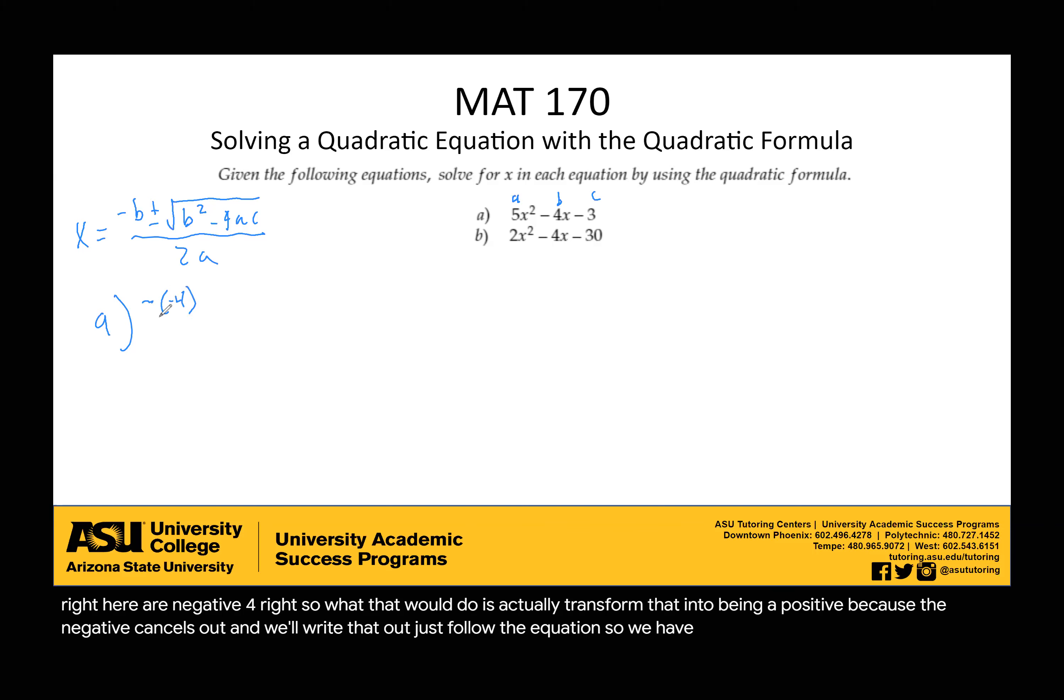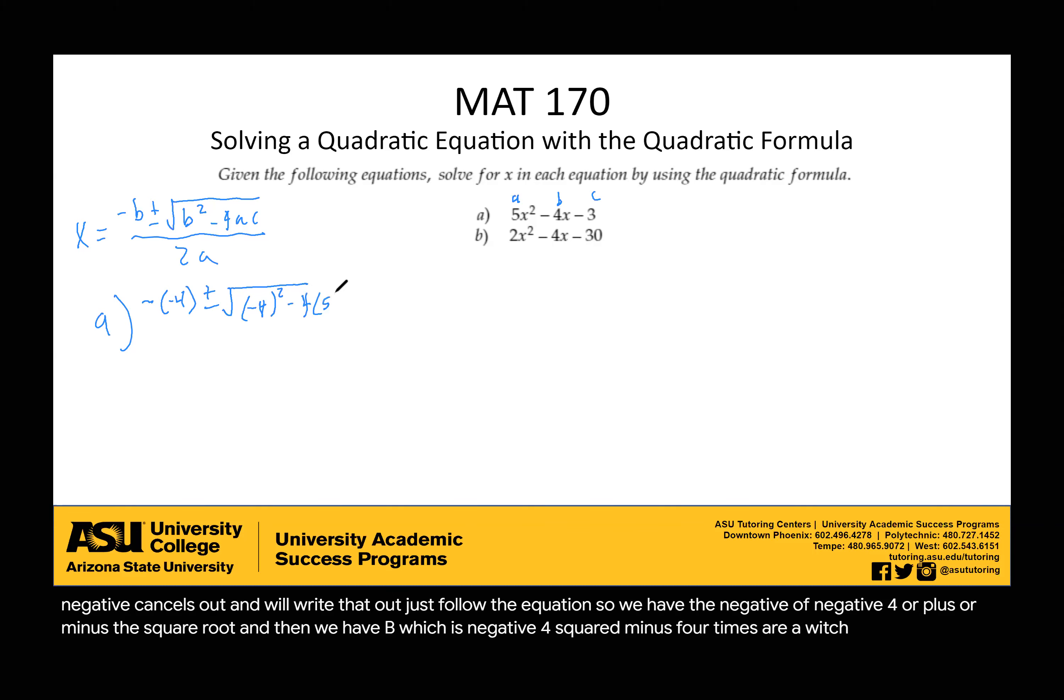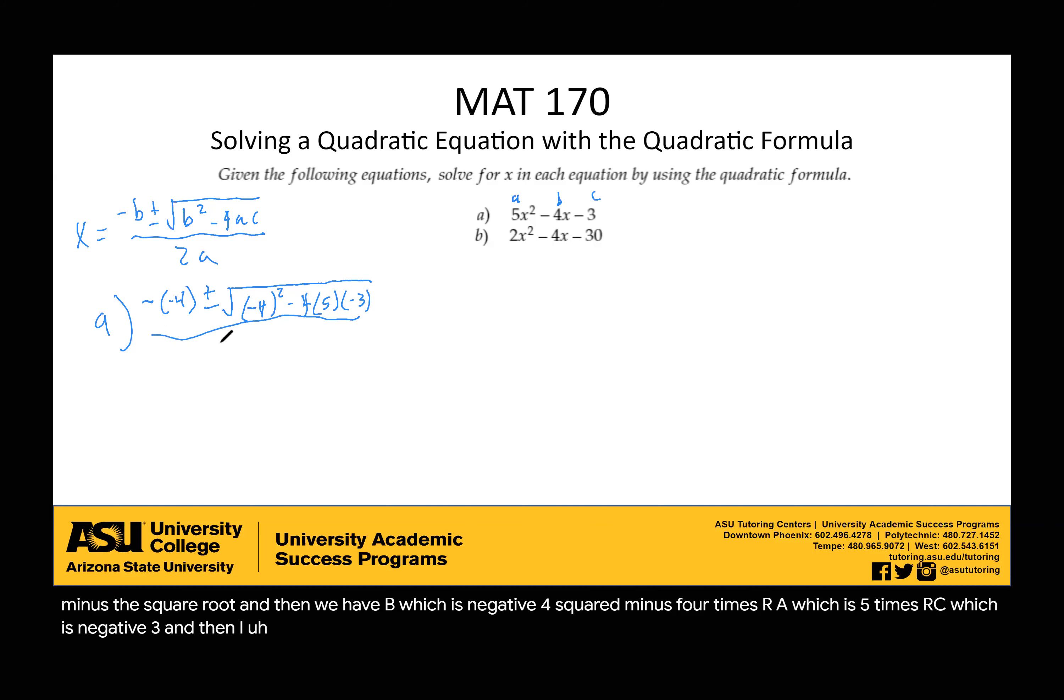So we have the negative of negative 4 plus or minus the square root, and then we have b, which is negative 4, squared, minus 4 times our a, which is 5, times our c, which is negative 3. And then that all gets divided by 2 times our a, which is 5.